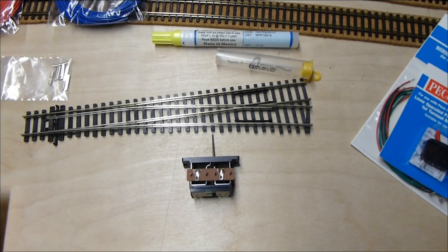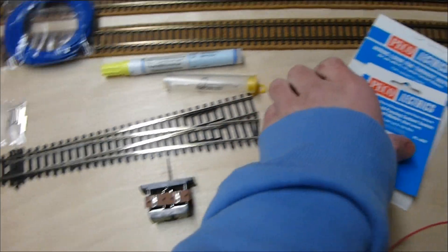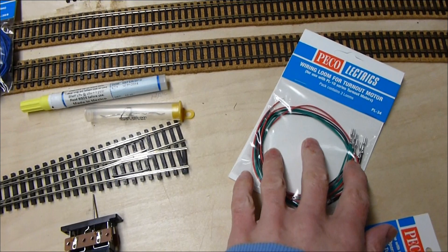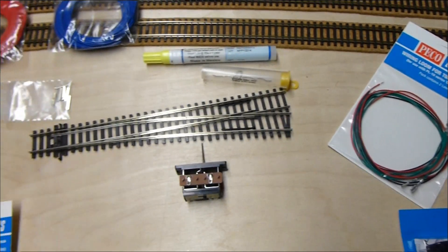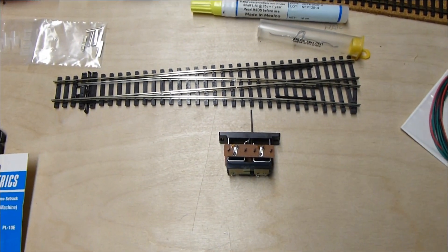Soldering is required at some stage. But if you do buy those wiring looms, it does cut down the soldering a bit. Expensive way to do it, but it's good for getting to hard-to-reach areas under the layout, which you might need to alter later on.